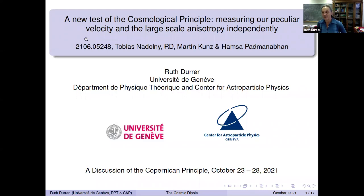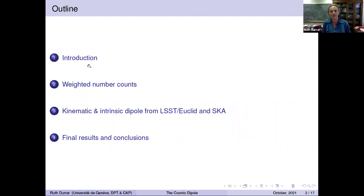I want to talk about a new test of the cosmological principle. I want to show you that it is possible to measure both the kinetic Doppler term, the kinetic dipole, and the dipole due to anisotropies independently. This is an idea which we have developed with our master student Tobias Nadolny, with my colleagues Martin Kuntz and Hamza Padmanaban. After the brief introduction, I will talk about the weighted number counts, which are the idea how one could measure both independently. Then I will apply this idea to some synthetic forecasts for LSST, Euclid, and SKA, and finally give you my results and conclusions.